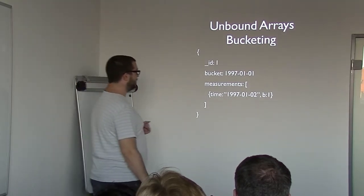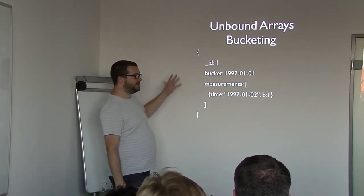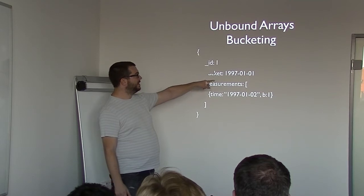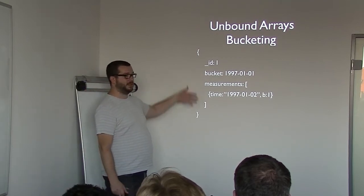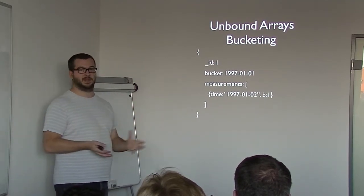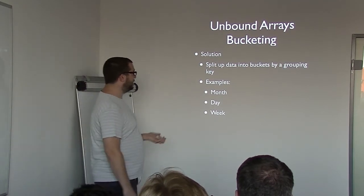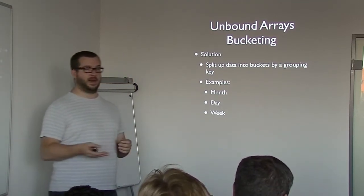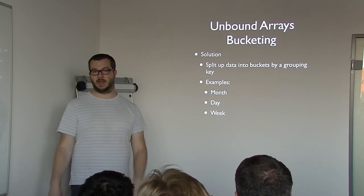One way to deal with this is bucketing — splitting a document up by some sort of group key. For example, a bucket defined for 1997-01-01 represents the month of January 1997, and all measurements for that month are in that bucket. Each document represents a month and will grow to a predictable size. The typical approach for analytics is to split by month, day, week, or even hour. You can still query on ranges by requesting the buckets for a particular time period and then doing aggregation across them.